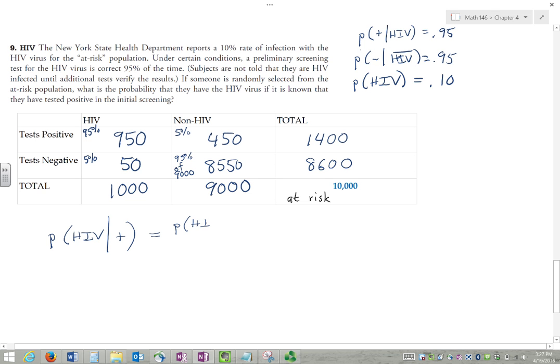So let's remember the formula for conditional probability. We want HIV and positive out of all the positives. So HIV given positive.